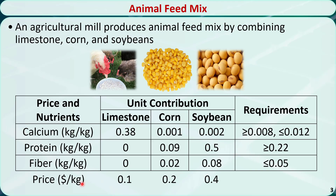The prices of each kg of limestone, corn, and soybeans are 0.01, 0.02, and 0.04, respectively. We want to find the feed mix that meets all these requirements with minimum cost.